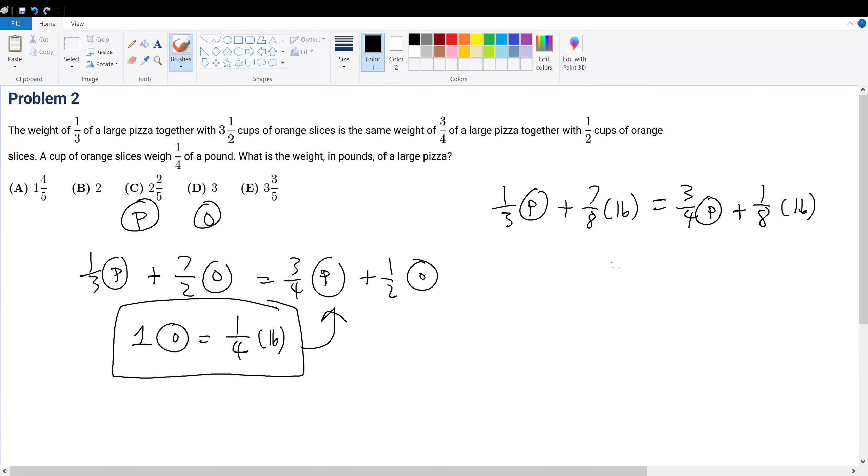Let's isolate p by subtracting one over three on both sides. I'm moving this over here and this over here, so we get... four minus nine p is equal to one over eight minus seven over eight pounds.